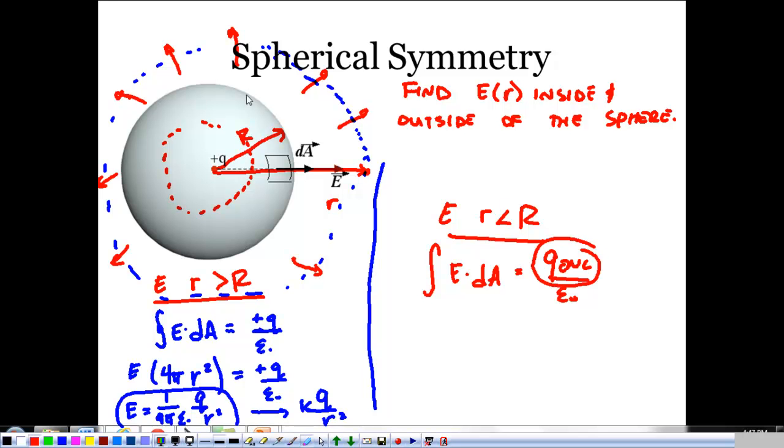We just said all the charge is sitting on the surface of our sphere. If that's the case, then for this red thing, I'm not enclosing any charge. For any time that R is less than R, I have zero charge. So, if that's zero, I know the area is not zero. The electric field inside must be equal to zero.